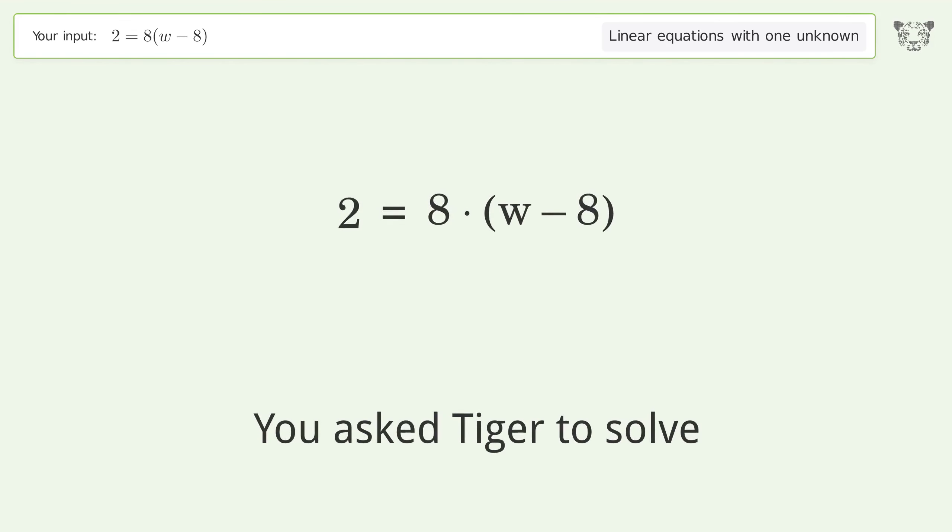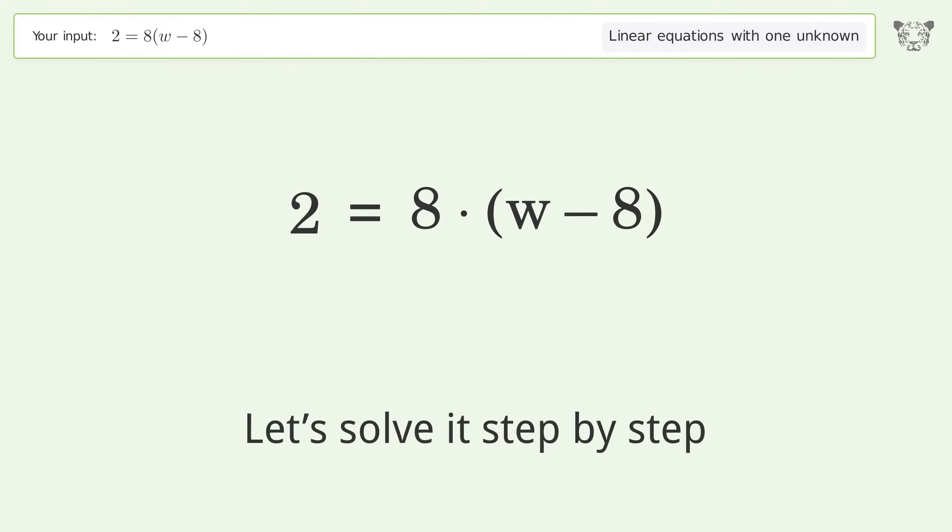You asked Tiger to solve this. It deals with linear equations with one unknown. The final result is w equals 33 over 4. Let's solve it step by step. Simplify the expression, expand the parentheses.